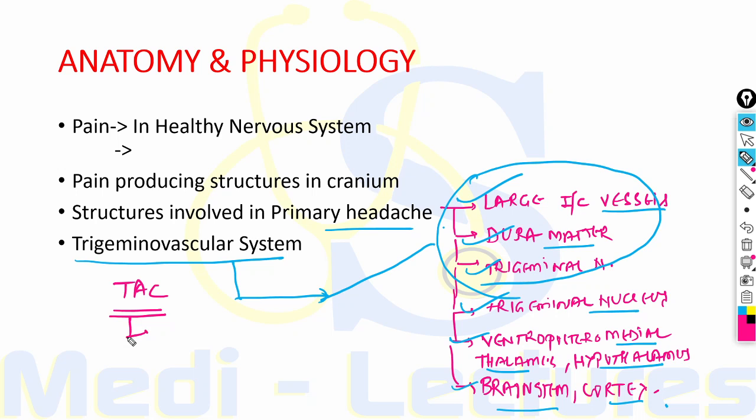The trigeminal vascular system is important and is involved in primary headaches known as trigeminal autonomic cephalgias. Due to activation of these structures, there are prominent cranial autonomic symptoms such as lacrimation, conjunctival injection, nasal congestion, rhinorrhea, periorbital swelling, oral fullness and ptosis. These are present on the side of the headache.